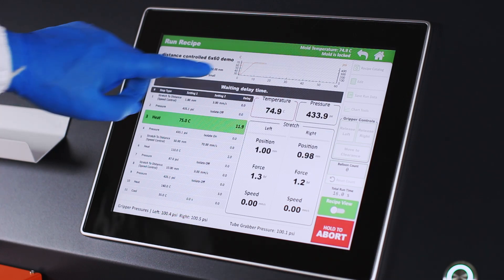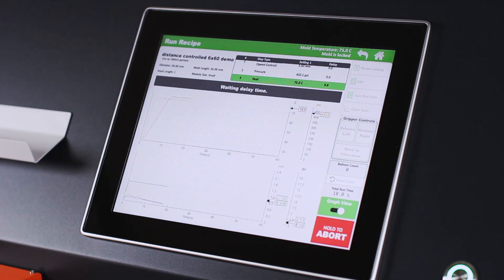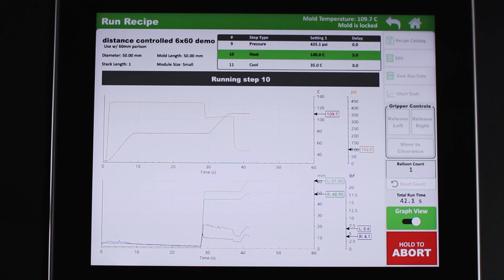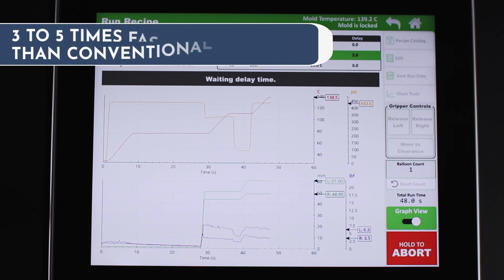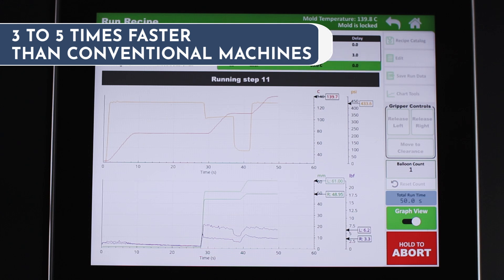Due to the induction heating system, molds can be heated to and cooled down from forming and heat set temperatures in a matter of seconds. The Blockwise Balloon Former will run most balloon processes three to five times faster than conventional machines.